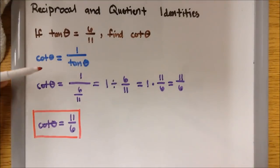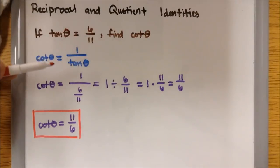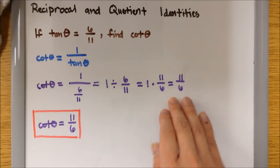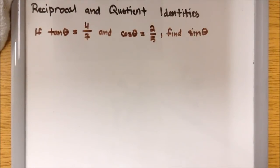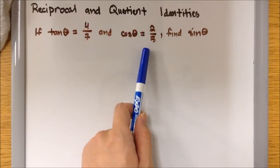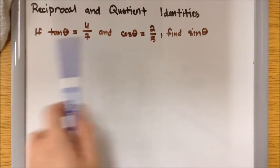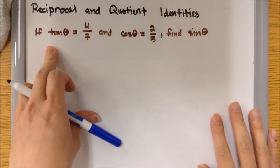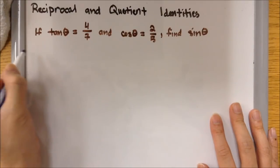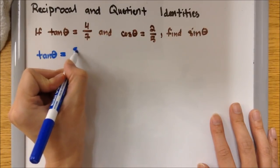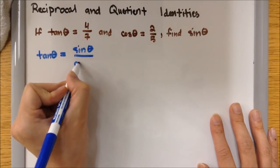All I did was use the reciprocal identity for cotangent theta, plug in the value of tangent theta in the denominator, write it as a division, rewrite as a multiplication, and simplify to 11 over 6. In our third example, if tangent theta equals 4 over 7 and cosine theta equals 2 over 5, find sine theta. We're going to use the quotient identity because there's a relationship between tangent, cosine, and sine. The quotient identity for tangent theta is sine theta over cosine theta.